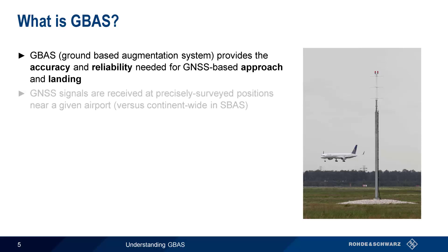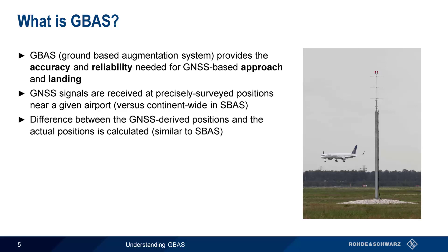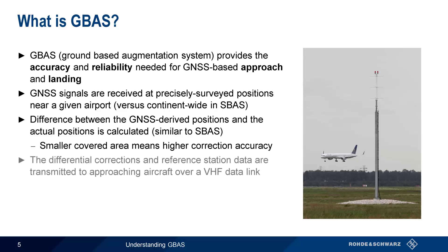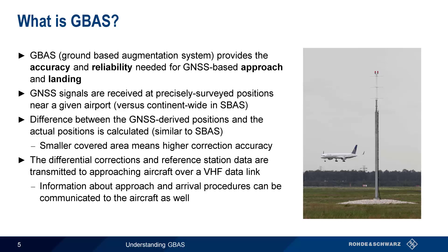Similar to SBAS, GBAS signals are received at very precisely surveyed positions. But instead of these locations being scattered around a country or a continent, in GBAS the reference locations are on or near a given airport. The difference between the GNSS-derived positions and the actual survey positions is calculated in a way very similar to SBAS. However, since GBAS only covers a relatively small area — an airport rather than a country or continent — the correction accuracy is much higher than in SBAS. The differential correction and reference station data are then transmitted to an approaching aircraft over a terrestrial VHF data link, instead of via satellites as in SBAS. This is why we refer to GBAS as a Ground-Based Augmentation System. Note that in addition to GNSS correction data, this VHF data link can also be used to communicate approach or arrival procedures.